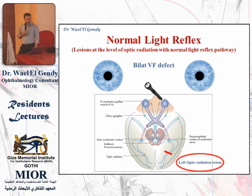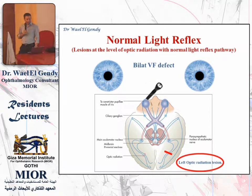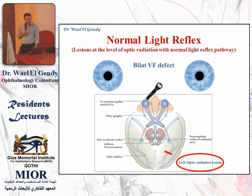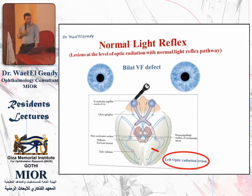Our next example is a lesion in the optic radiation. A lesion in the optic radiation, as we can see, is behind the light reflex pathway. So you will have a normal light reflex — swinging the flashlight on both sides will give you normal pupillary reflexes, with no movement, dilatation, or narrowing of the pupils. You will have a deficit of vision and visual field, but you will have normal pupils.